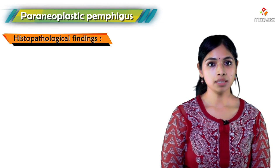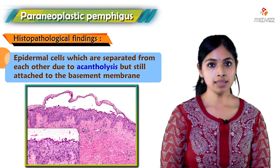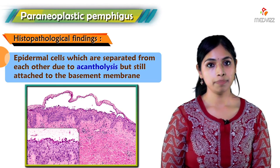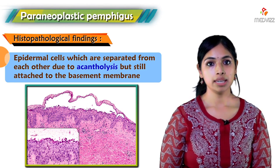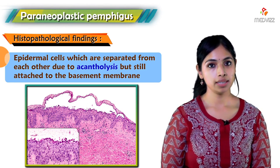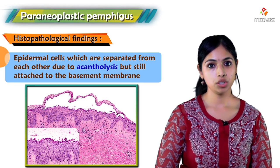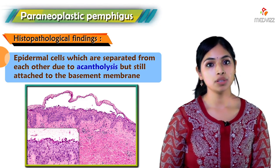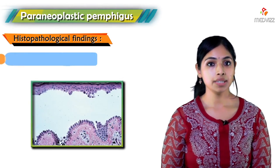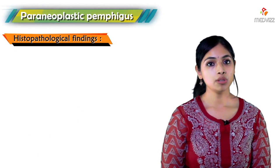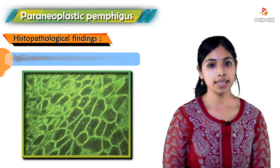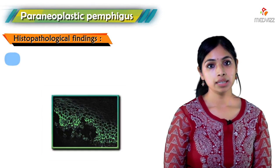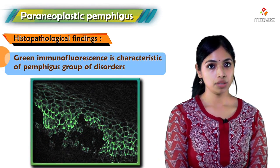Histopathologically in pemphigus we see epidermal cells separated from each other due to acantholysis, but still attached to the basement membrane. This creates an intraepidermal blister, and the appearance on histopathological slide is a row of tombstone appearance. We also perform immunofluorescence, where we see an IgG pattern in a fishnet-like appearance — the classic green immunofluorescence pattern for the pemphigus group of disorders.